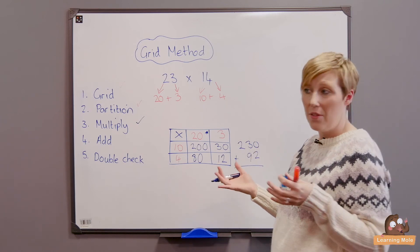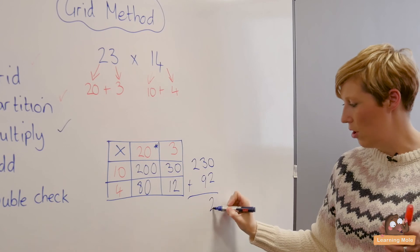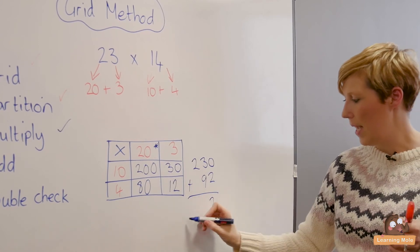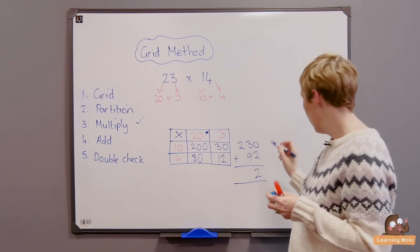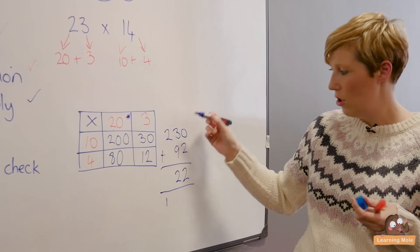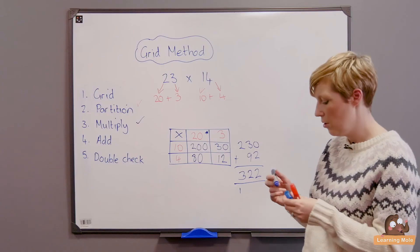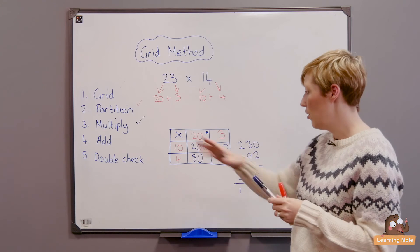So I've got my 2 plus my 0 is 2, my 3 plus my 9 is 12, which I've got my 2 here and I'm going to carry my 1. And then I've got 2 plus nothing, but I've got my 1 down there, which is 322.